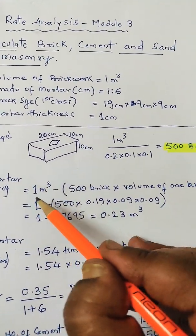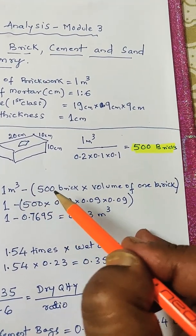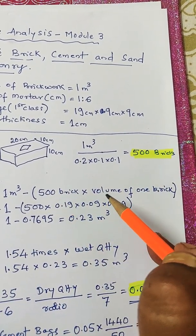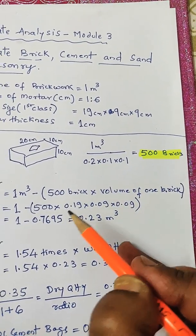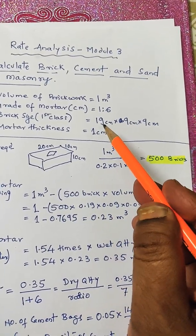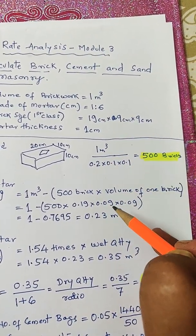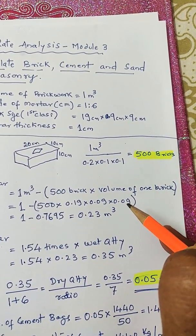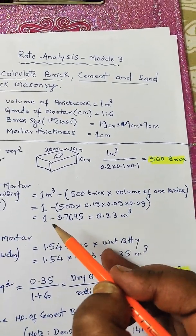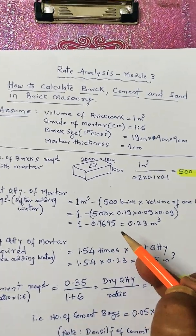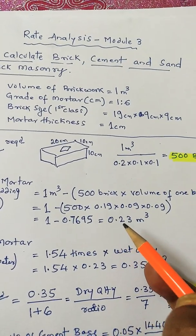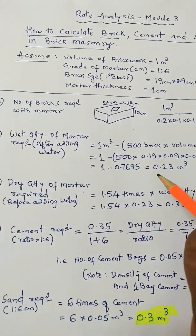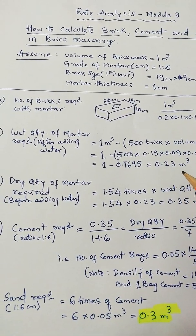So 1 meter cube of brickwork minus the brick quantity, that is 500 bricks into volume of one brick. Volume of one brick is 0.19 meter by 0.09 meter and 0.09 meter. That is 1 minus 0.07695, that is equal to 0.23 meter cube. So after removing the quantity of bricks you need mortar quantity of 0.23 meter cube.